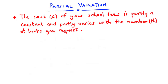Let's consider this case: assume that you are a student and the cost of your school fees is partly a constant and partly varies with the number n of books you request. This primarily means that the cost depends on two things — first, you have accepted to become a student of that school and are required to pay a fixed amount, and secondly, it depends on the number of books you are going to request from the school.